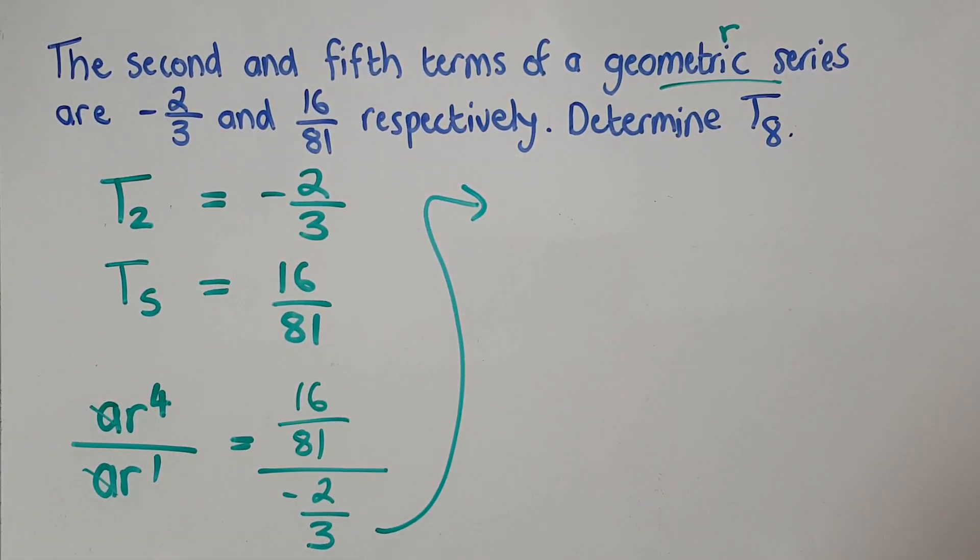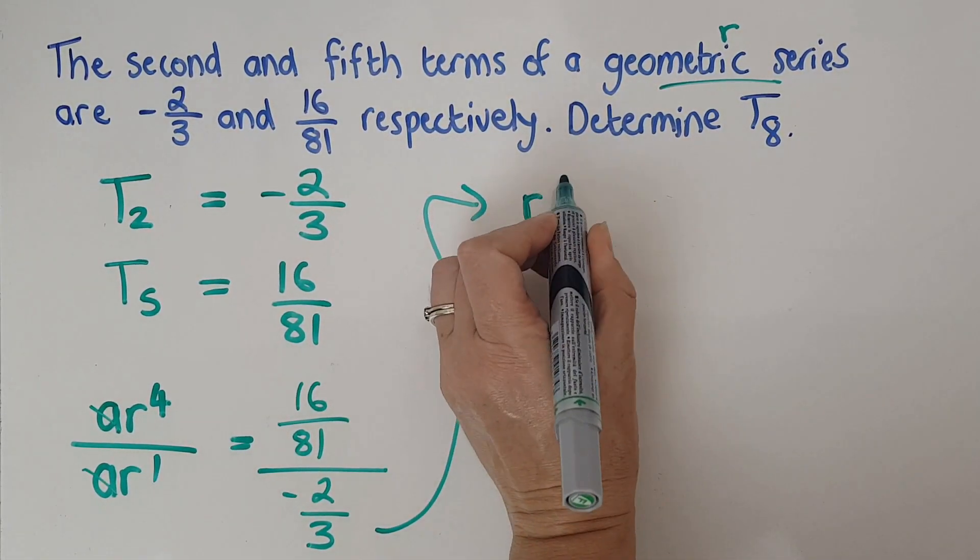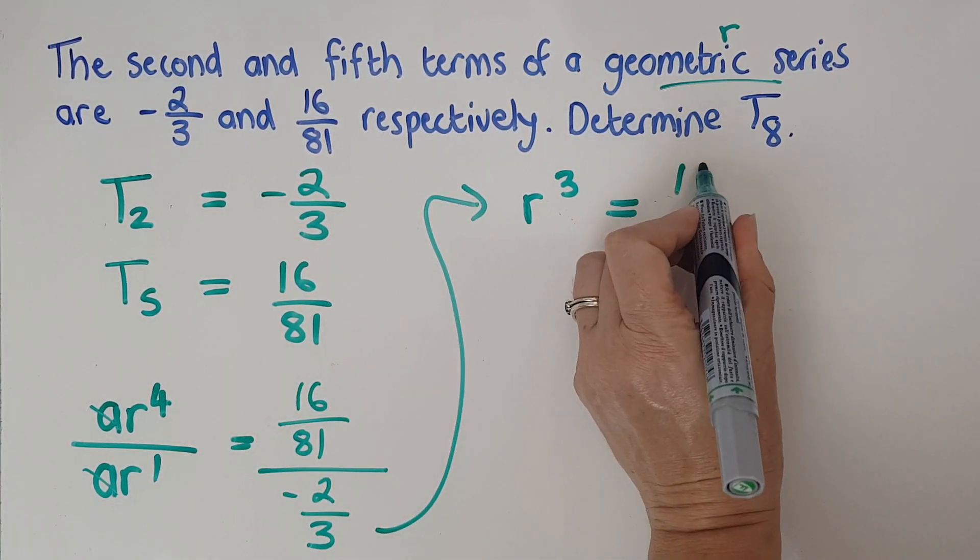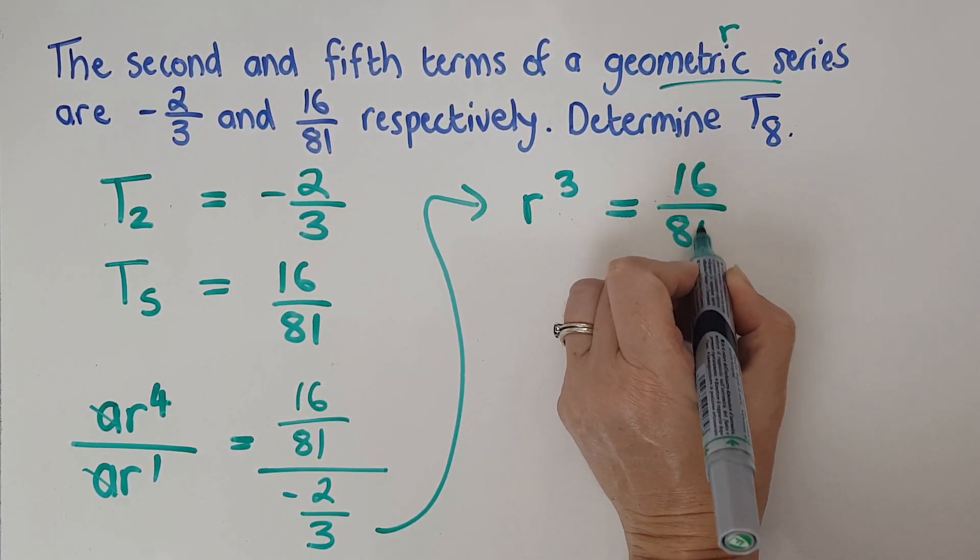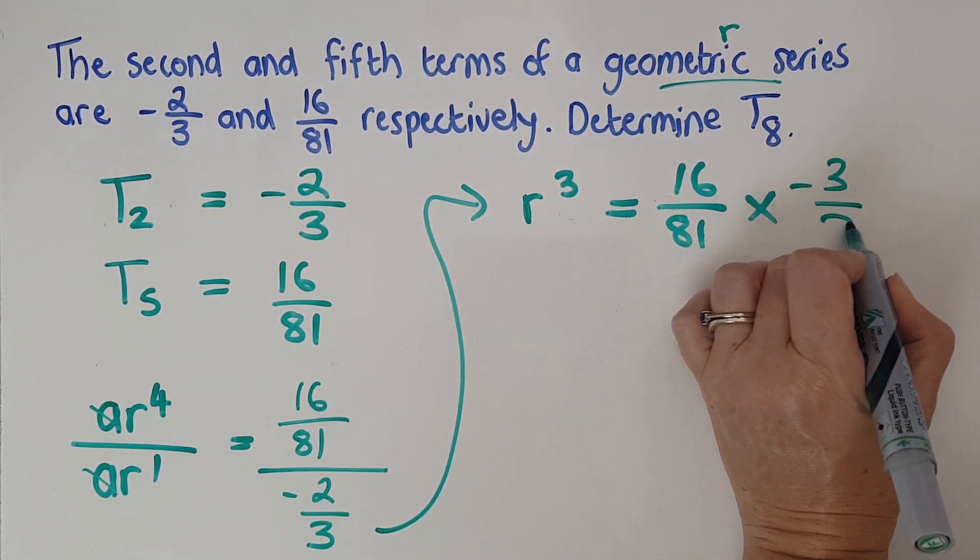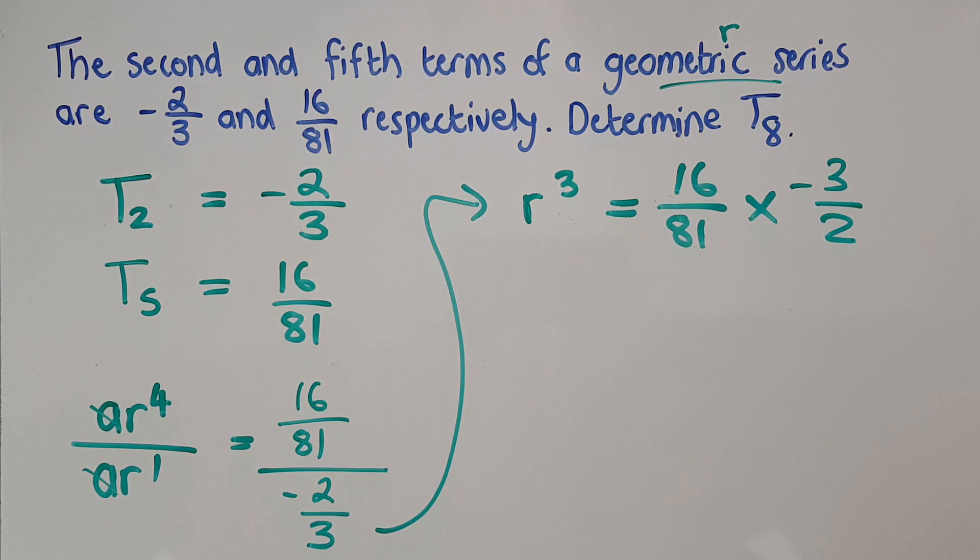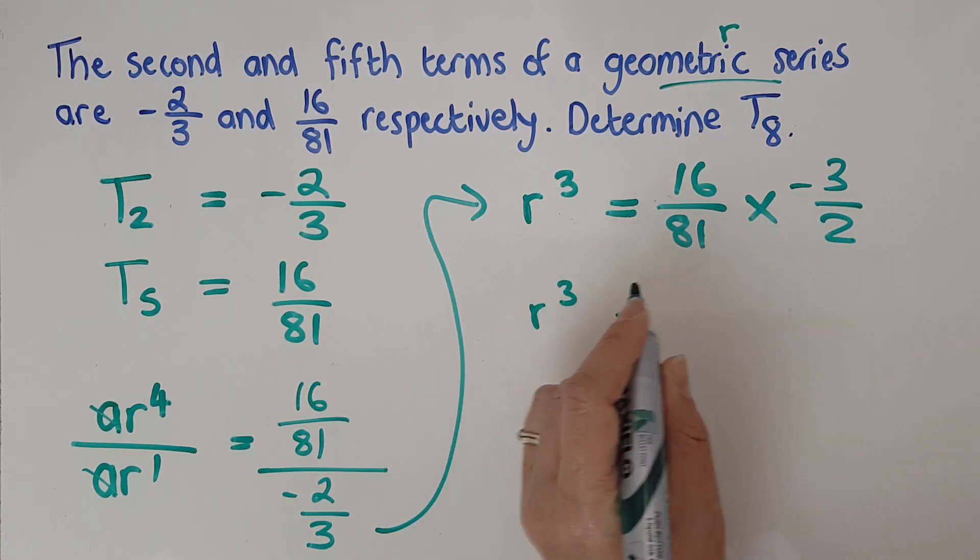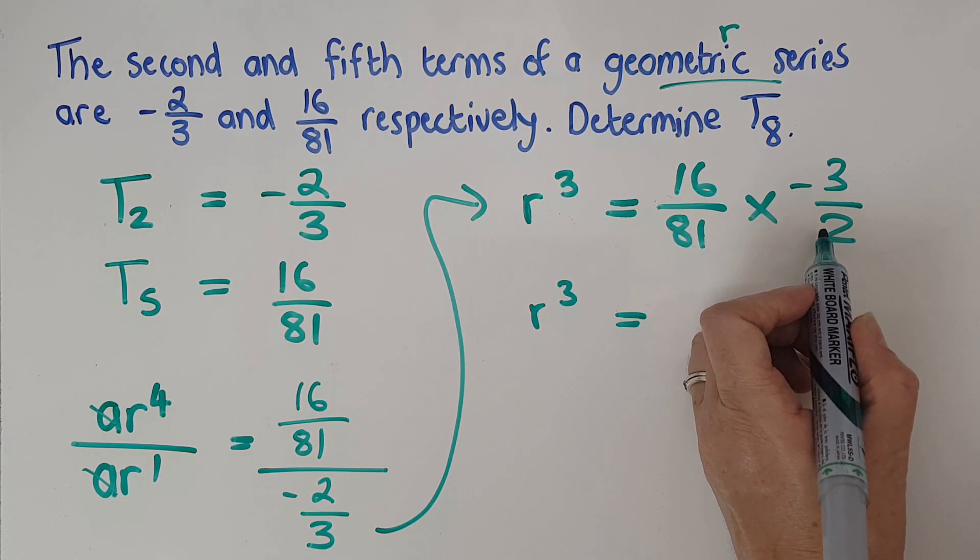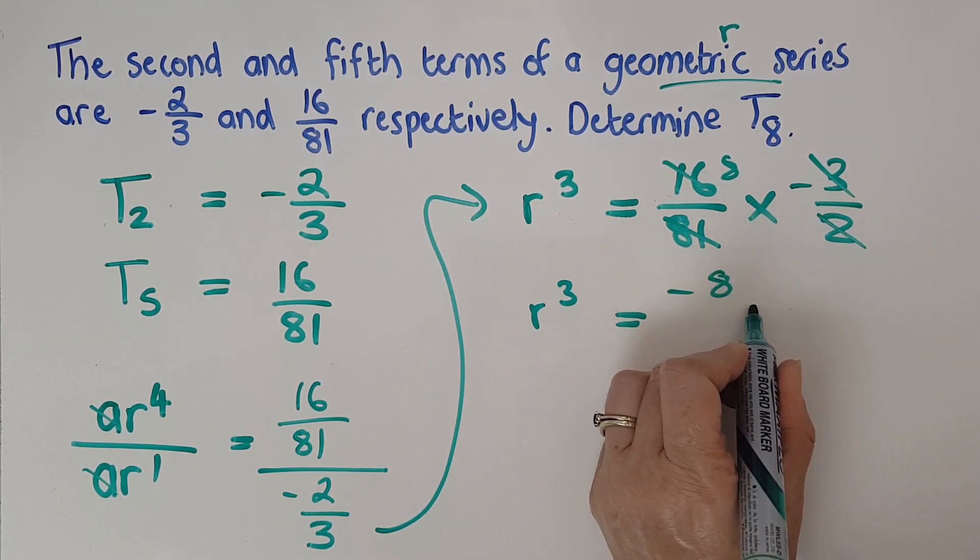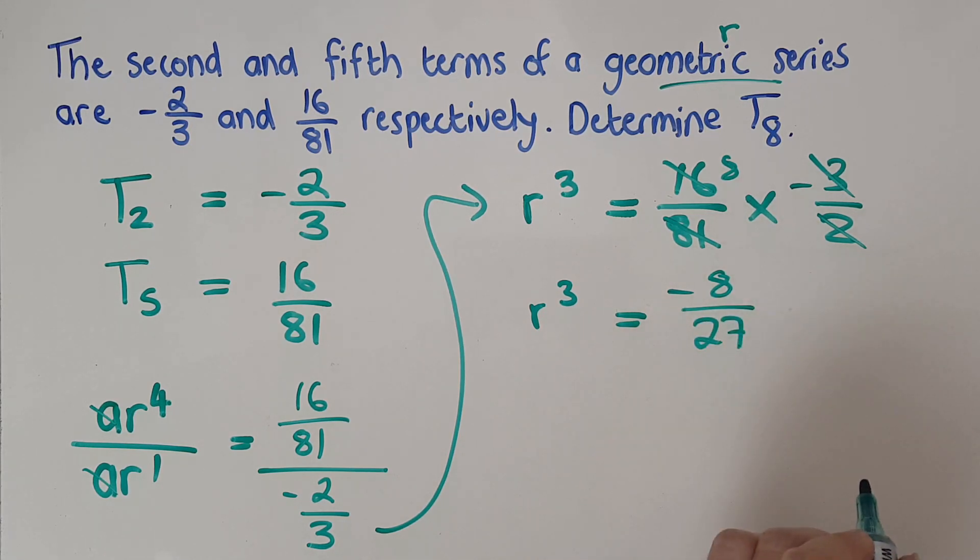Continuing that up here, I'm going to have R to the three equals, let's go tip in time. So it's going to be 16 over 81 times negative three over two, I've tipped it. And then I'm going to have R to the three. Things will cancel here quite nicely. And I'm going to have negative eight over 27.